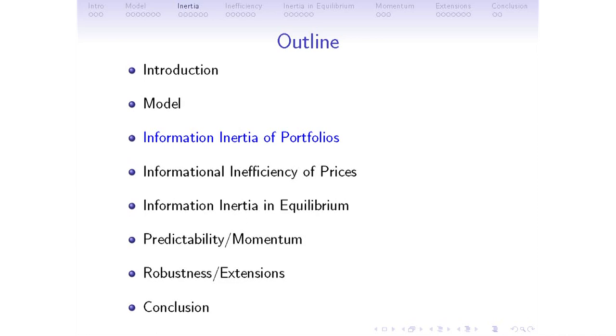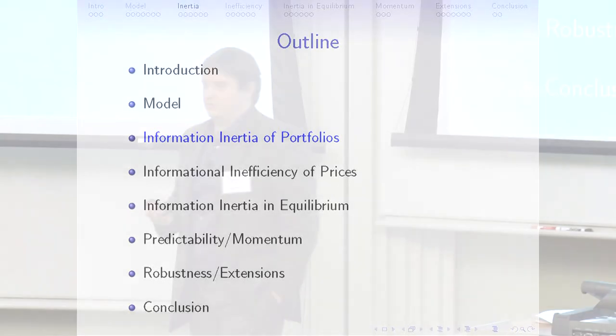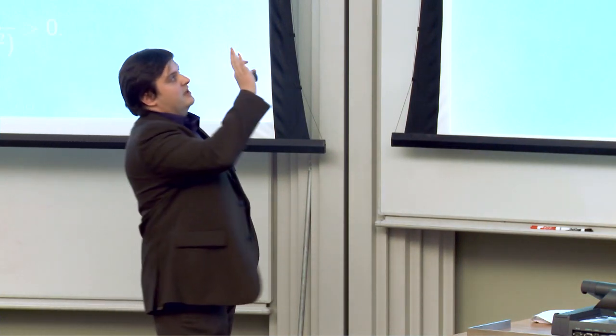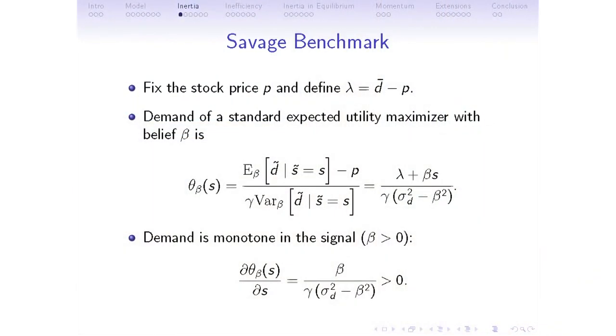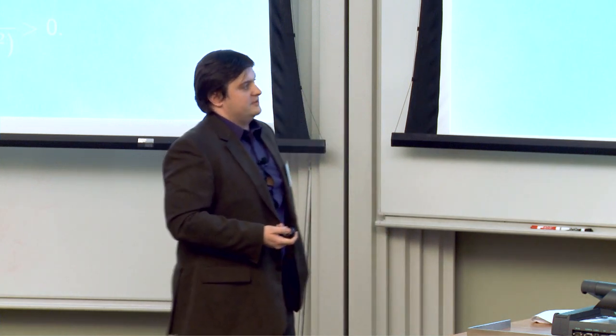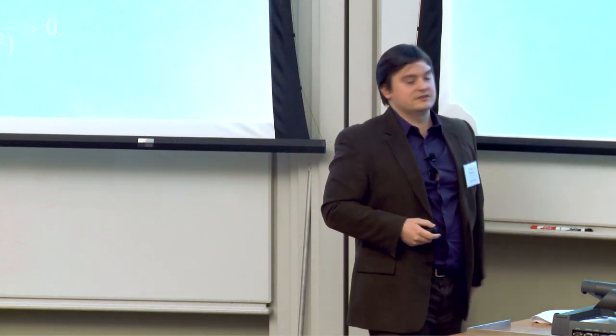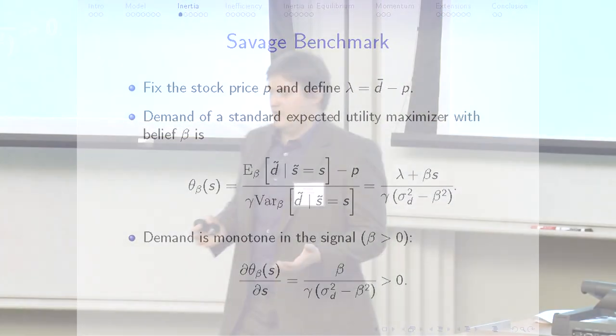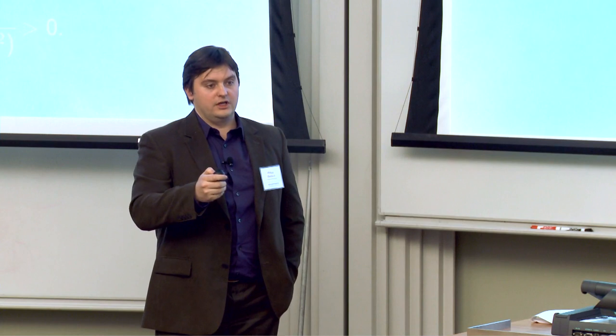This concludes the model section. Now let's do portfolio choice. First, the Savage benchmark: a standard expected utility agent with a single dogmatic beta. Fixing the stock price, the unconditional risk premium is the unconditional mean of the dividend minus the price. The demand of a standard expected utility agent is just the posterior mean minus the price, divided by the risk premium. For a standard agent with a positive covariance, demand always reacts positively to changes in the signal — if the signal is better, he invests more.